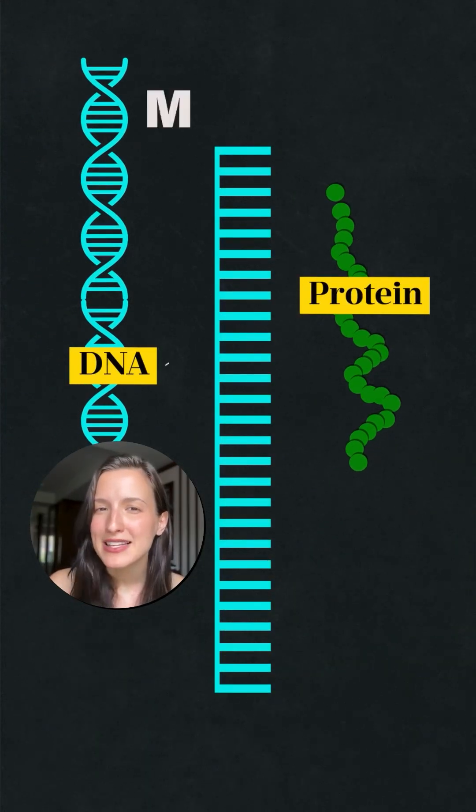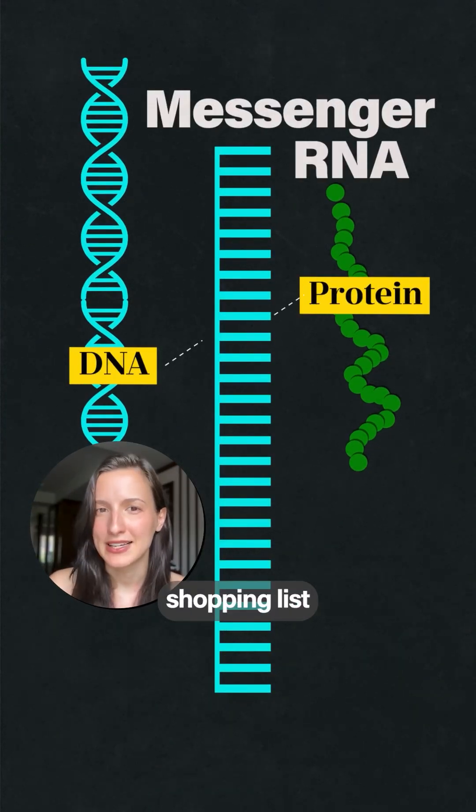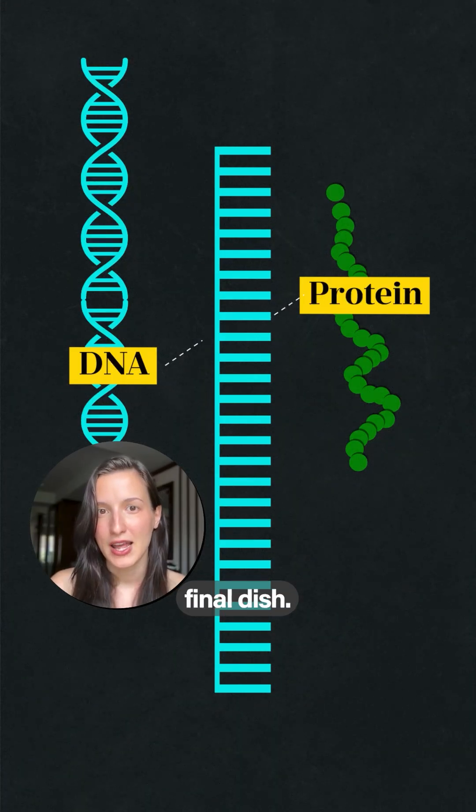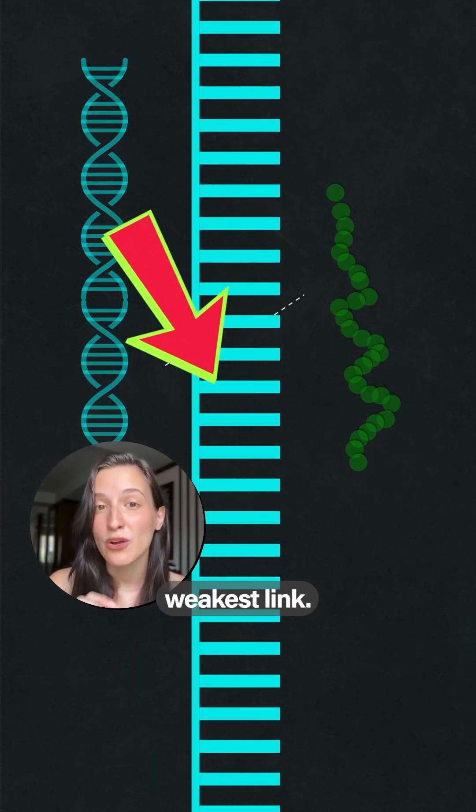But in the middle, there's messenger RNA, or your shopping list that you need to assemble before you make your final dish. And they realized that this is the weakest link.